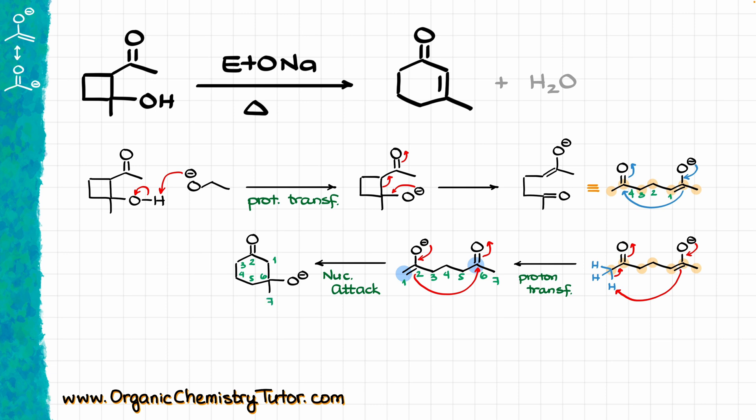Now, the next step in our mechanism that we are doing here in the basic media is going to be to protonate our negatively charged species with our solvent, which is ethanol. So, oxygen is going to grab this proton from ethanol, making another aldol intermediate, and of course, the ethoxide that we have just generated.